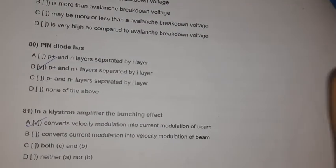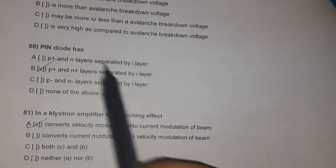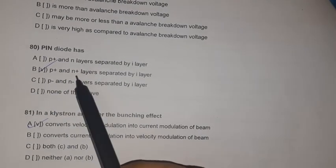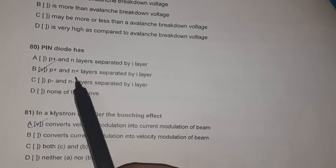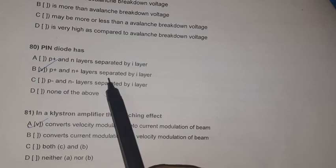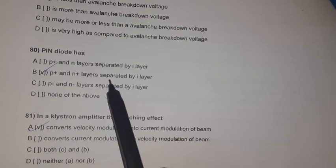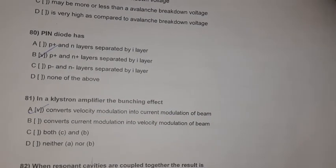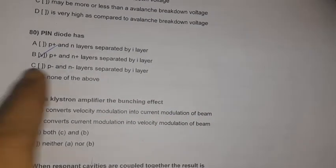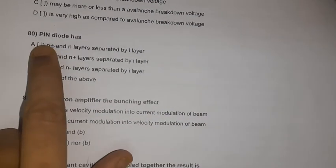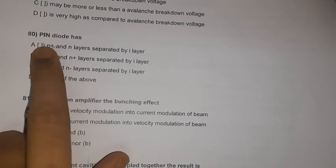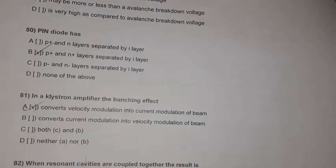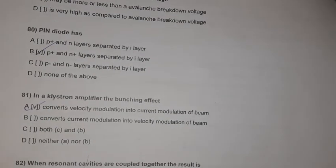Question 78: A PIN diode has P+ and N+ layers separated by an intrinsic (I) layer — from the name itself: P-I-N.